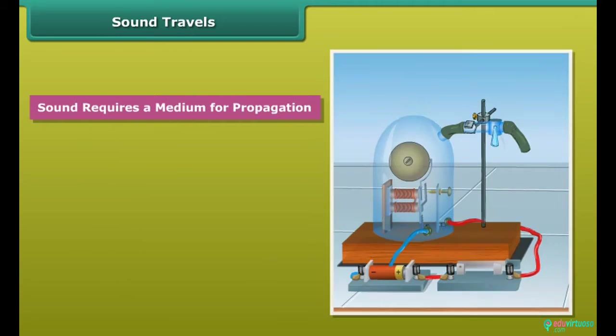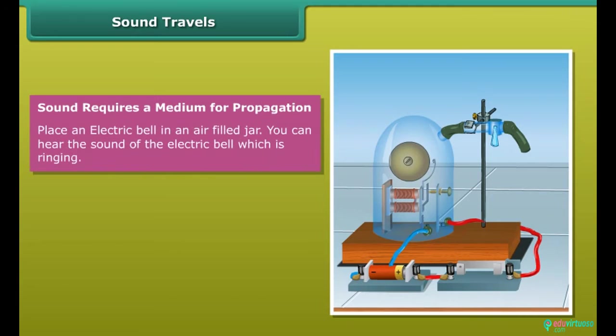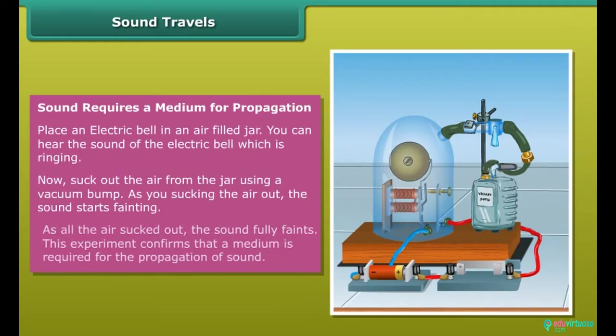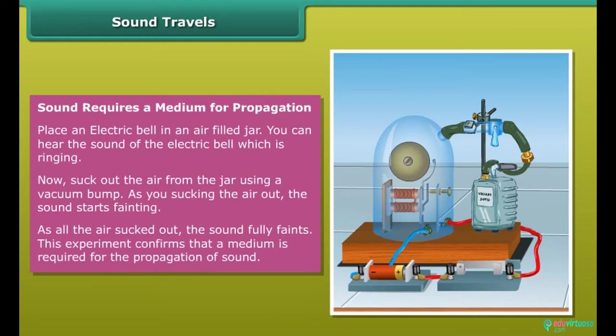Sound requires a medium for propagation. Place an electric bell in an air-filled jar. You can hear the sound of the electric bell which is ringing. Now suck out the air from the jar using the vacuum pump. As you suck the air out, the sound starts fainting. As all the air sucked out, the sound fully faints. This experiment confirms that a medium is required for the propagation of sound.